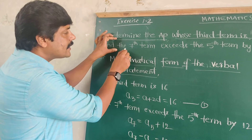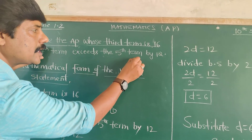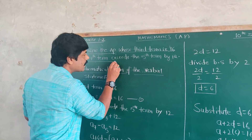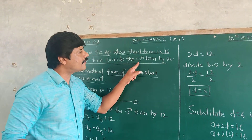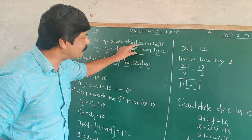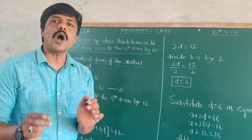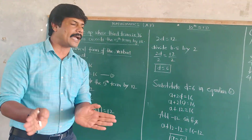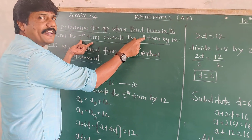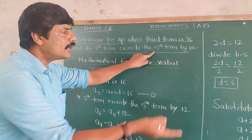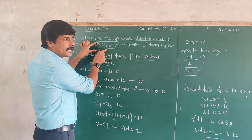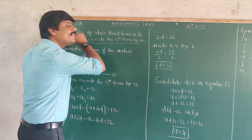The second clue is: the seventh term exceeds the fifth term by 12. The seventh term exceeds the fifth term by 12. What does it mean? The seventh term becomes equal to the fifth term when you add 12 to it. That means the seventh term is 12 more than the fifth term.